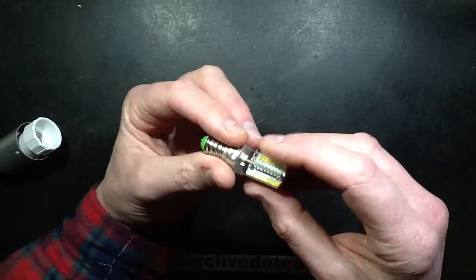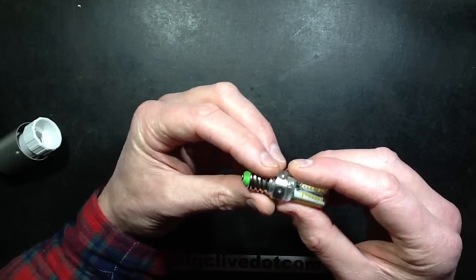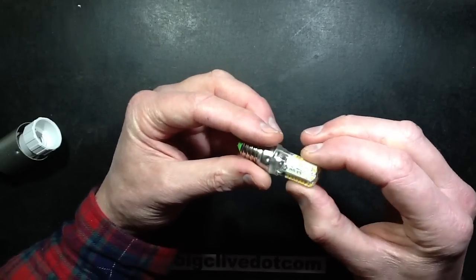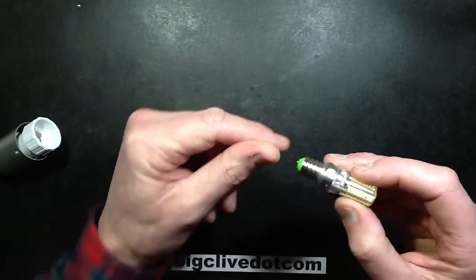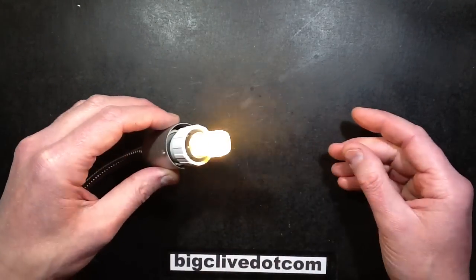The first time I saw these, they started off as the version that goes into a G9 lamp holder to emulate the small size of the tungsten halogen lamp. They're actually quite neat. I'll just plug this in. They seem to have found their way into other forms.